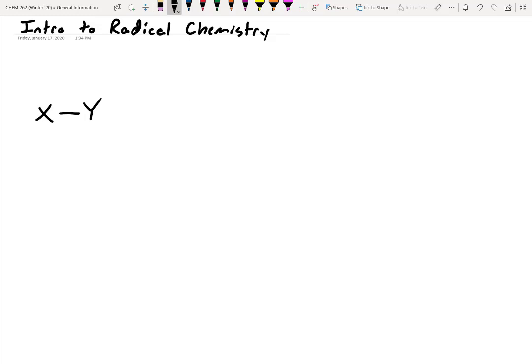We've seen a lot of reactions that involve the making and breaking of bonds. If we have two atoms covalently bonded together, one atom could get kicked off. What happens to X if Y leaves? X will be a positive charge because it will have lost its electrons, where Y will get the electrons from that covalent bond, giving it a negative charge. This is referred to as heterolytic cleavage.